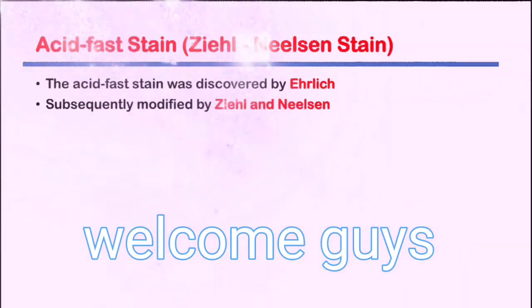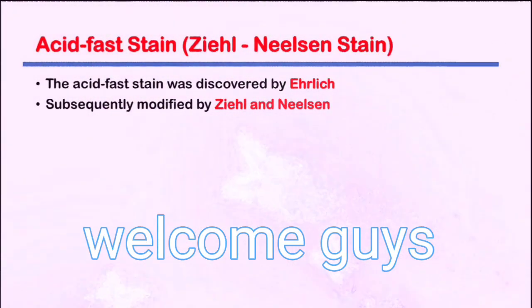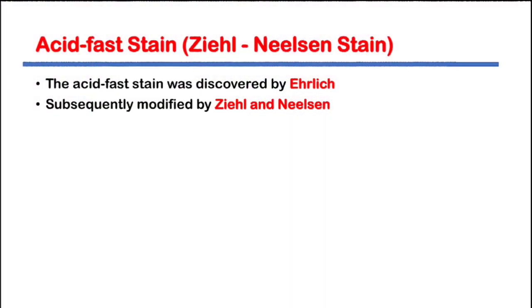Hello guys, welcome back to a new video. Today we are going to see acid fast staining. Acid fast staining was first discovered by Paul Ehrlich, and Ziehl and Neelsen modified this acid fast staining. It is therefore known as Ziehl-Neelsen stain or modified acid fast staining.